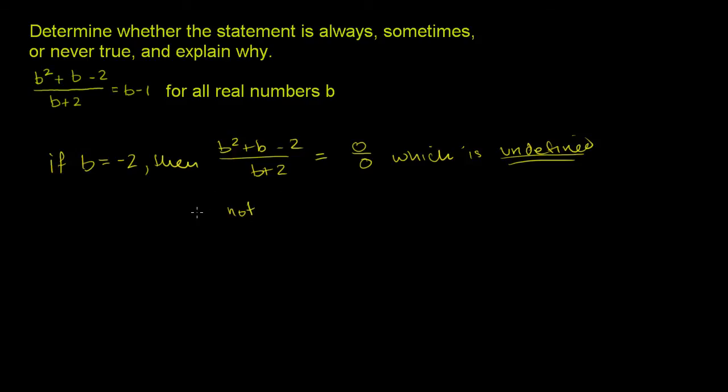Let me write this this way. It's not equal to b minus 1, which is negative 2 minus 1, negative 3. When you put negative 2 in here, on the left-hand side, you don't get it doesn't evaluate to negative 3, it evaluates to 0 over 0, which is undefined.